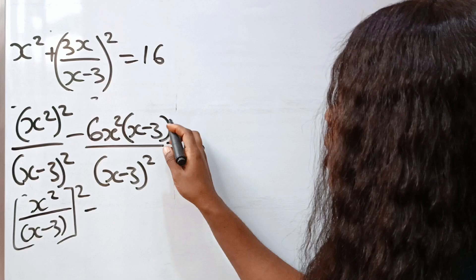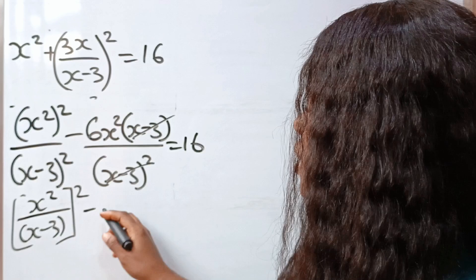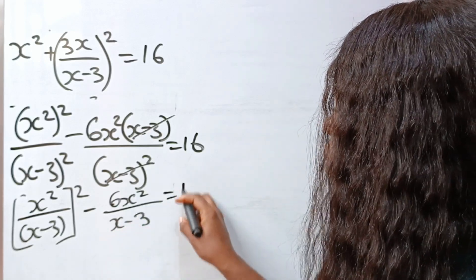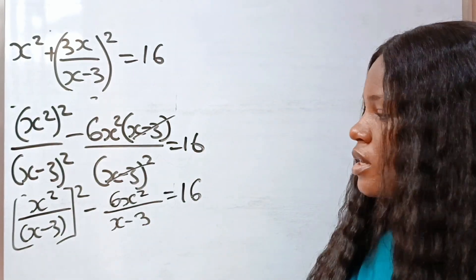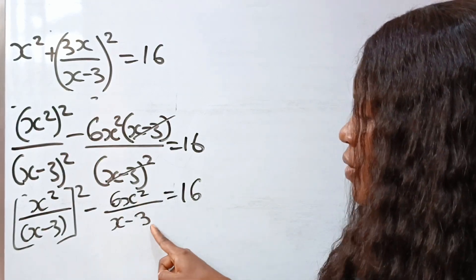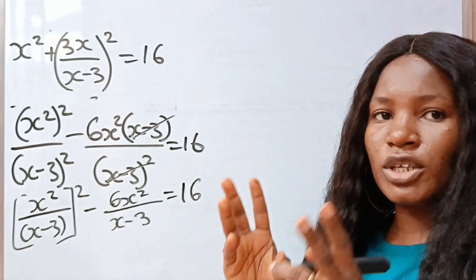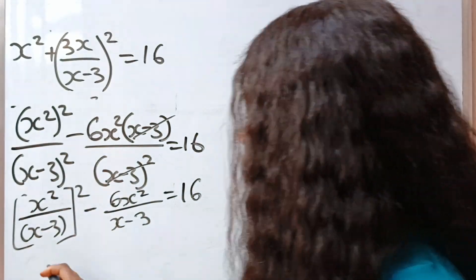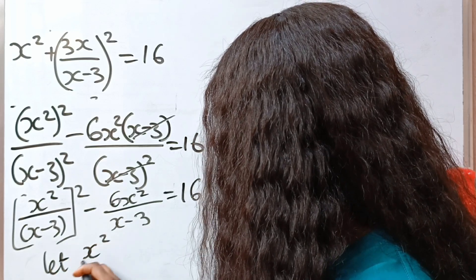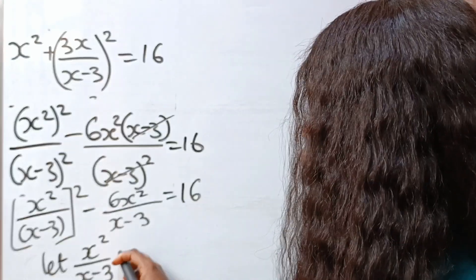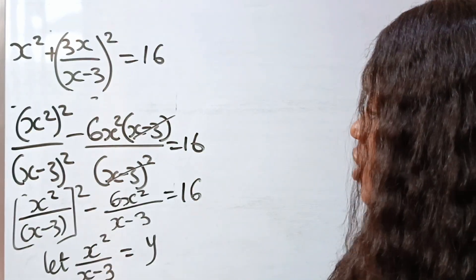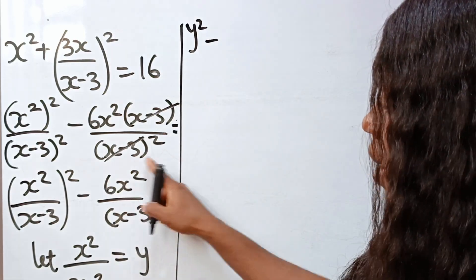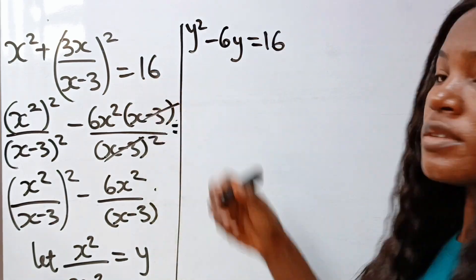Looking closely, we have x squared divided by x minus 3 appearing in both terms, so we can let x squared divided by x minus 3 equal y. Then the first term becomes y squared, giving us y squared minus 6y equal to 16.